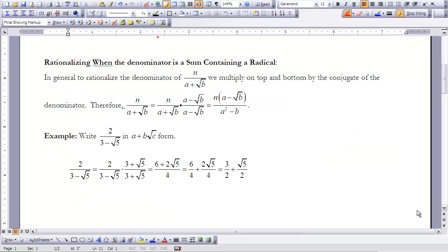We can also rationalize when the denominator is a sum containing a radical. So in general, to rationalize the denominator of n over a plus square root of b, we can multiply on top and bottom by the conjugate of the denominator, very much like we did with our complex numbers in chapter 6. So if n over a plus square root of b is equal to n over a plus square root of b times a minus square root of b over a minus square root of b,